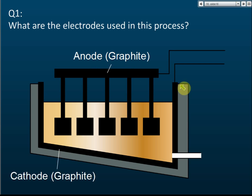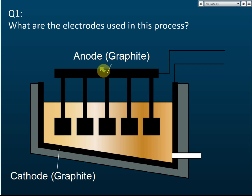Compare this to the extraction of Sodium, where only the anode uses graphite. But for the extraction of Aluminium, both the anode and cathode use graphite. So that covers the electrodes.